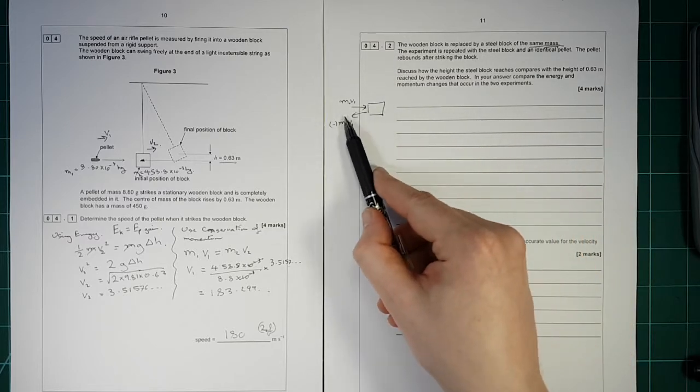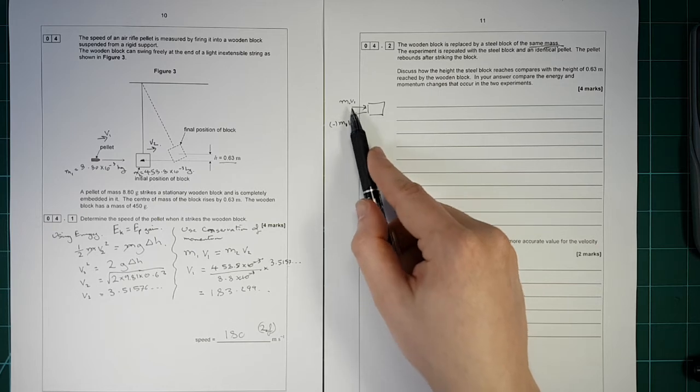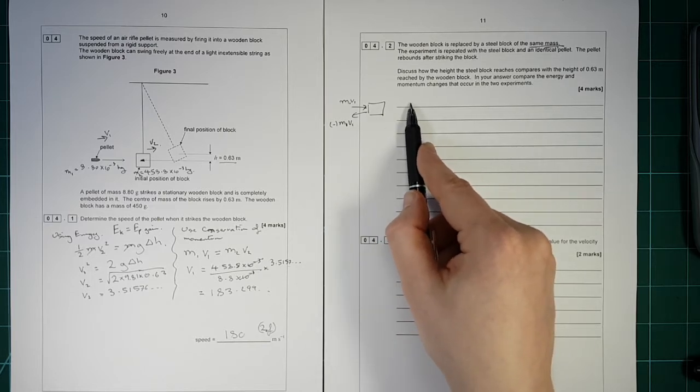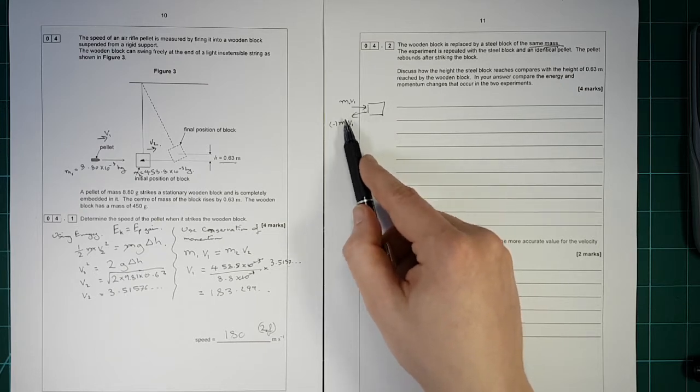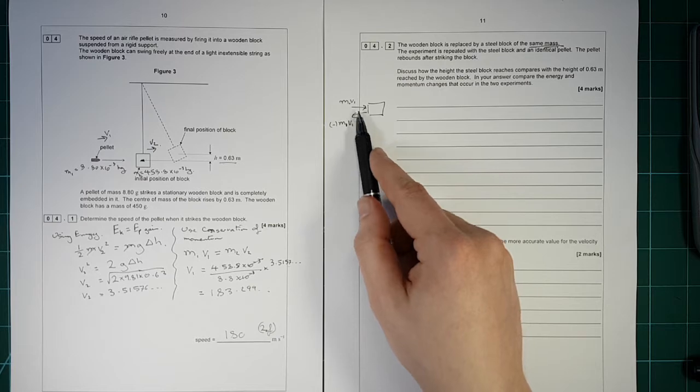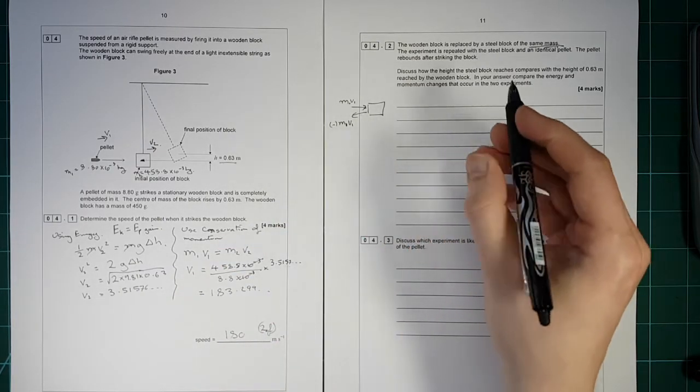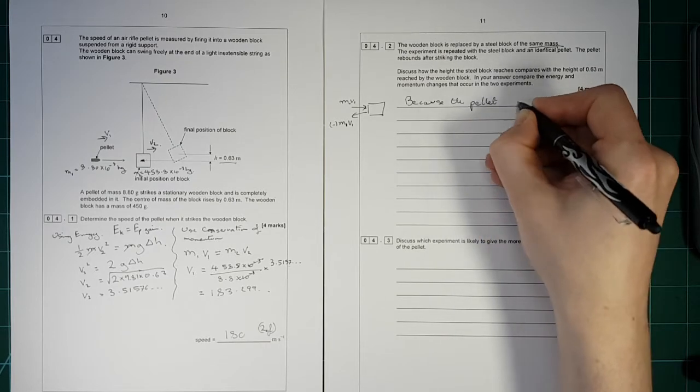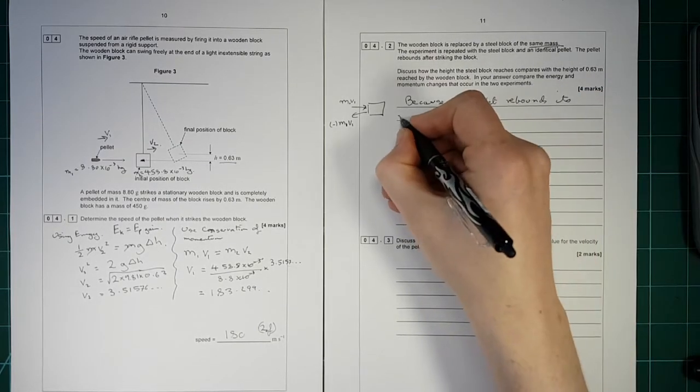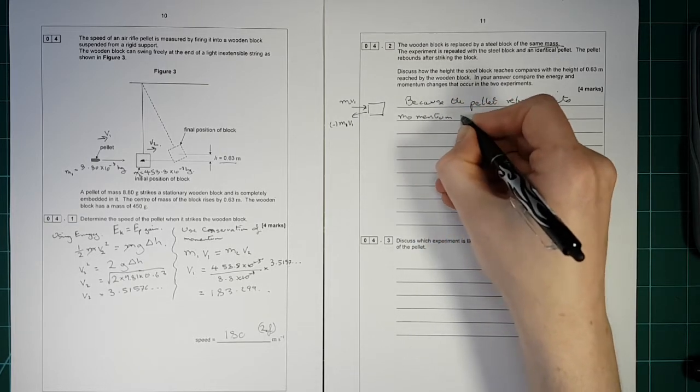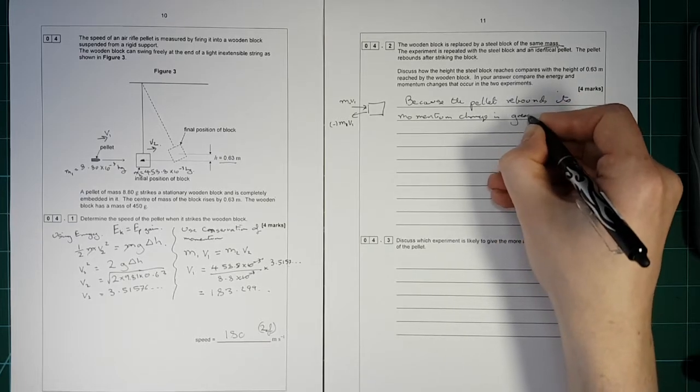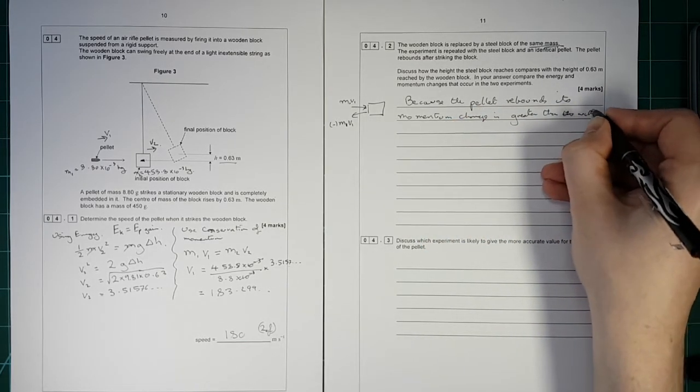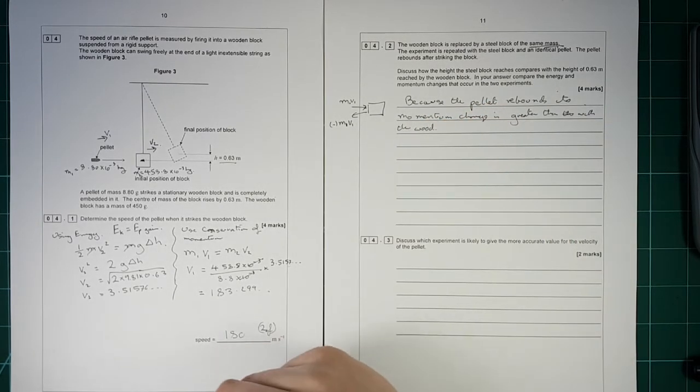So when it bounces off here, it has a greater change in momentum because it starts with momentum going this way. Instead of ending with the pellet ending with its momentum essentially combined with the block going that way, it rebounds. It will probably rebound at about the same speed, maybe a little bit less than it went in. So the momentum change is almost double what it is here. So I'll say that to start with. Because the pellet rebounds, momentum change is greater than with the wood. So the momentum change is bigger.